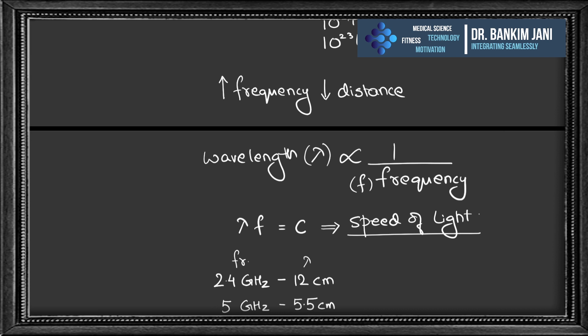Frequency is the number of cycles per second — how many waves pass in one second. Higher frequency means the wave uses its energy faster, so it travels a shorter distance. Conversely, lower frequency means fewer waves pass per second, so they travel a longer distance.